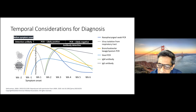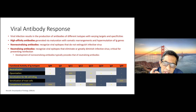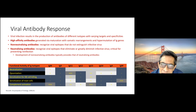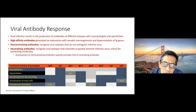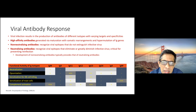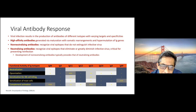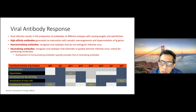We know the temporal dynamics — before symptom onset PCR is likely to be high, and by the second week PCR is likely to be negative. There are high-affinity antibodies generated by somatic rearrangements and hypermutation of IgG genes, non-neutralizing antibodies which recognize viral epitopes but do not distinguish infective from non-infective virus, and crucially, neutralizing antibodies which eliminate or diminish inactive virus — critical for preventing reinfection. Non-neutralizing antibodies typically precede neutralizing antibodies. Antibodies also mediate opsonization, NK cell killing, mast cell sensitization, and complement activation.